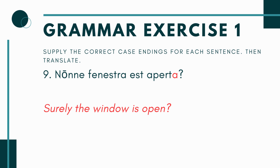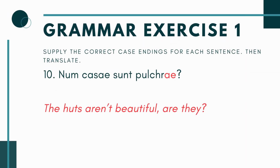On number nine, we have nonne. We use this when you're asking a yes or no question and you're expecting the answer to be yes. So a lot of times it gets translated as surely. We have nonne fenestra est aperta? We have our subject, fenestra — the window — and the verb to be, so it's nominative case on both sides: the window is open. Since I have nonne, I translate this as surely the window is open. You're phrasing it in a way that you're expecting the person to say yes.